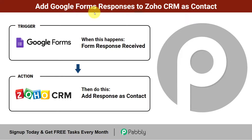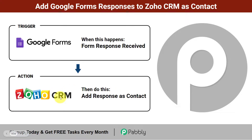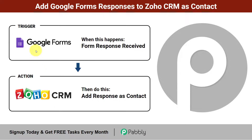In this video we will learn how to add Google Forms responses to Zoho CRM as contacts automatically. Whenever a form response is received in Google Forms, the same response should be automatically added as a contact in Zoho CRM, so that I don't need to export, copy and paste each response or create contacts individually. I'm going to create this automation using an automation software where Google Forms will be the trigger and Zoho CRM will be the action application.